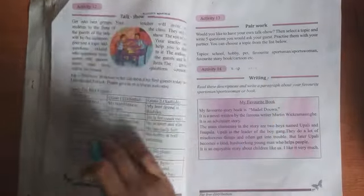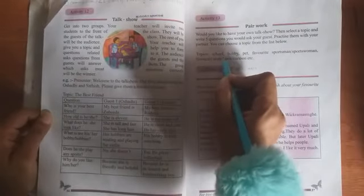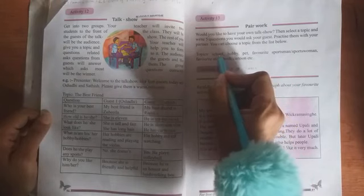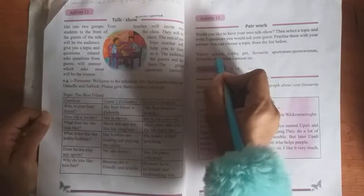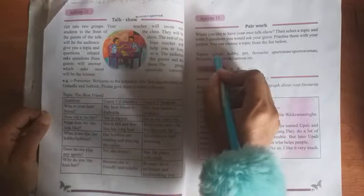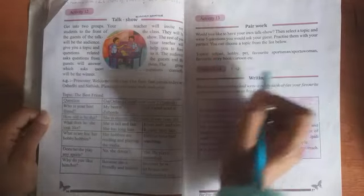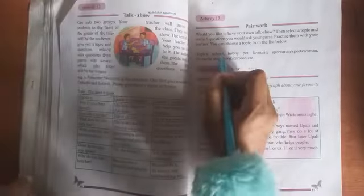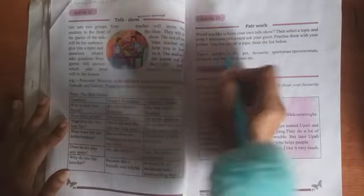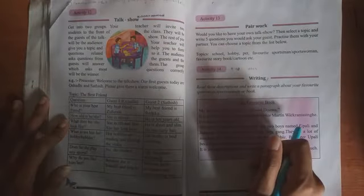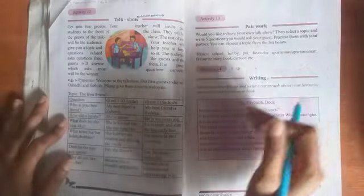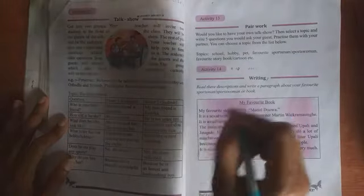If you take school, you can use these question words you learned. What is your school? Where is it? How many students are there in your school? How many teachers are there in school? How big is your school? Like that you have to make five questions about that topic. And then you can write answers as well. Since you don't have a friend, you can write your own answers as well.